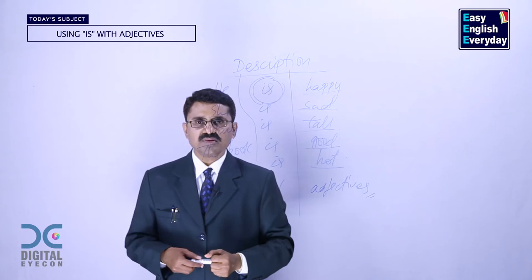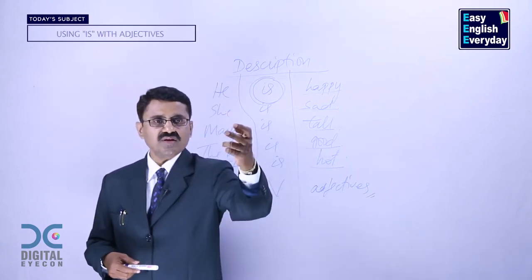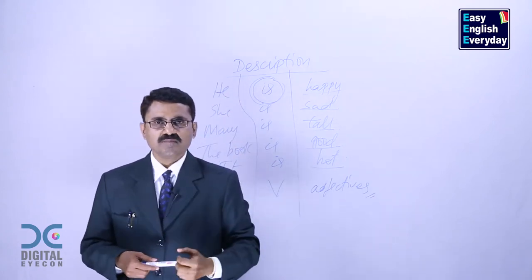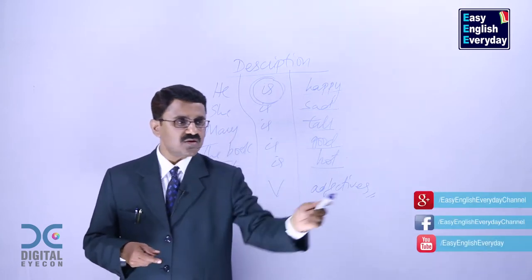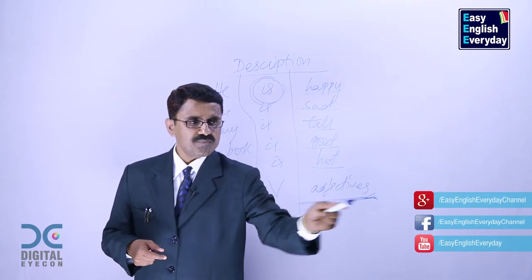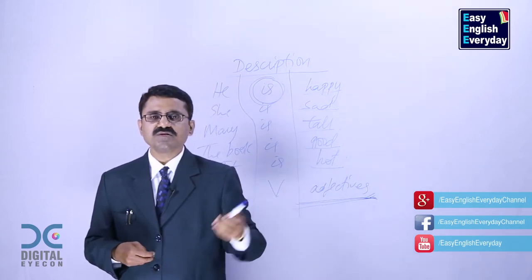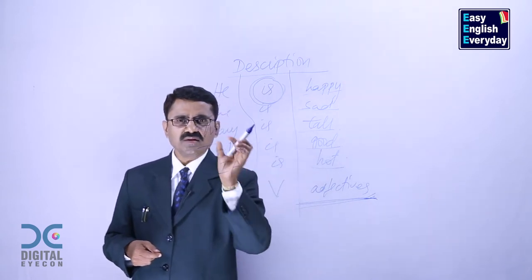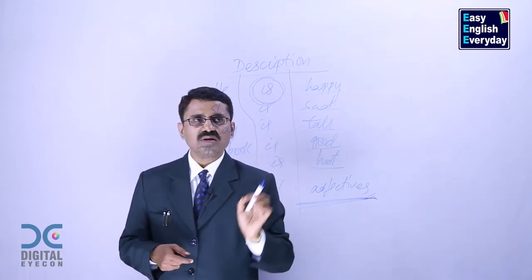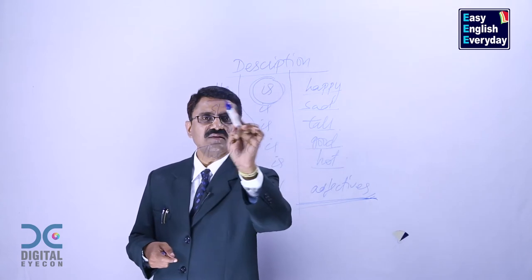You can simply call them descriptive words because their function is to describe. And what is there to describe in this world? Living thing and a non-living thing. So when any word describes a living or a non-living thing, it is called adjective. There are thousands and thousands of adjectives in English language. They will help you in making short, small, simple and easy to understand sentences like this.